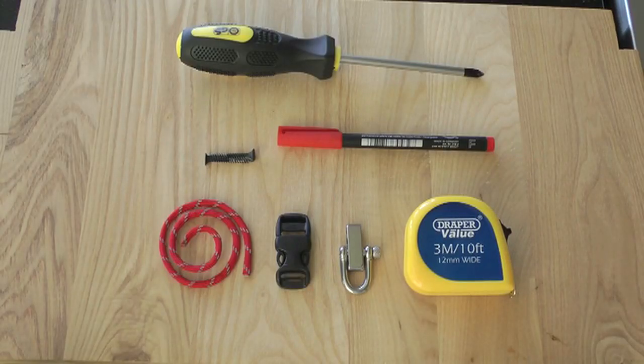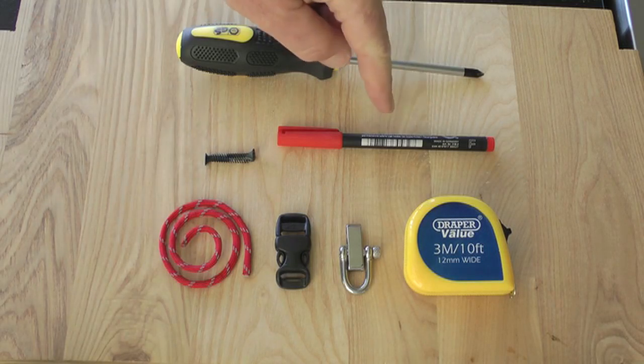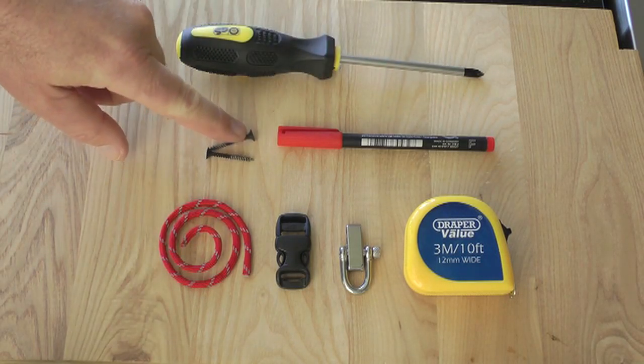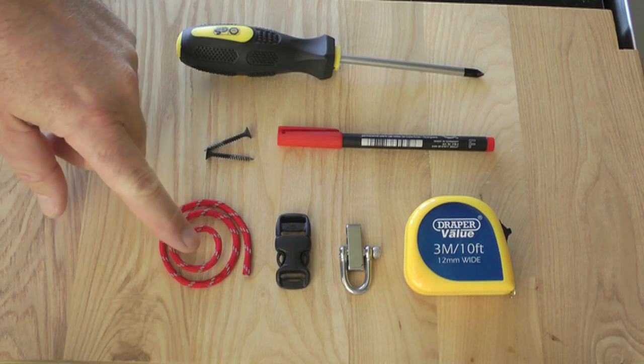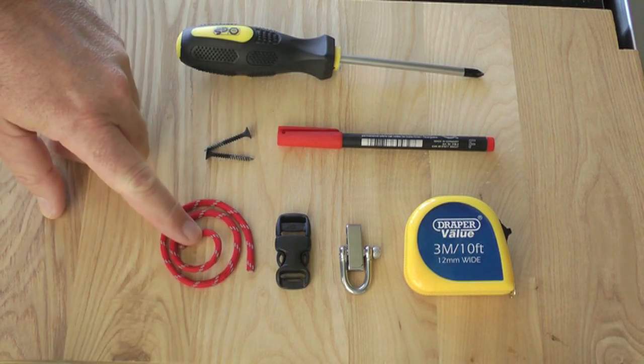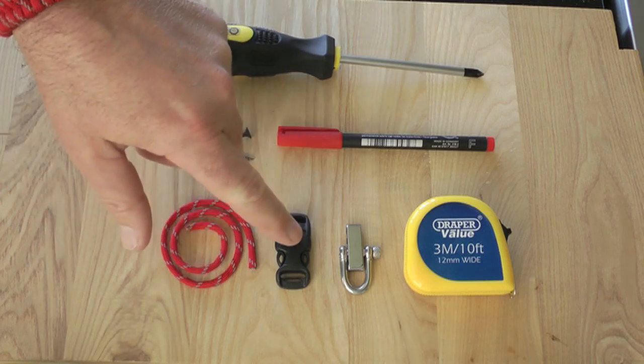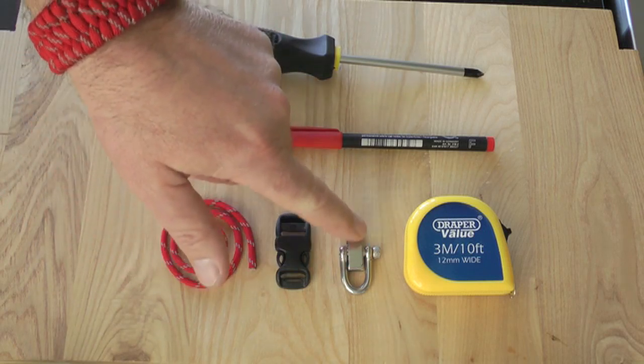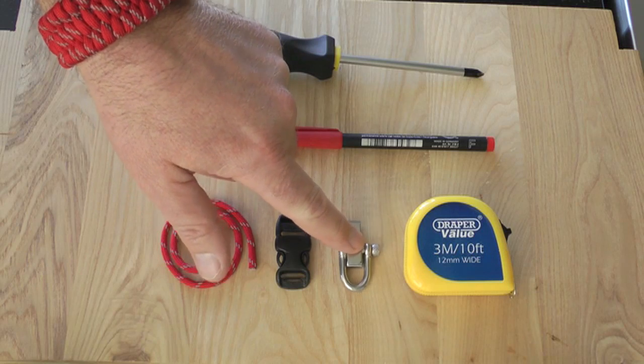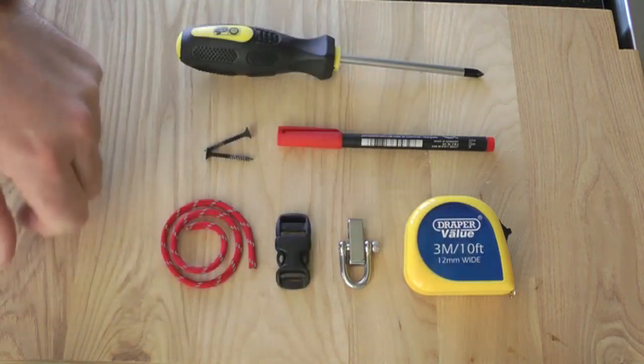To make this bracelet, you're just going to need these few items. You're going to need a screwdriver, a pen or a pencil, a couple of screws, short length of paracord or string. That's just going to secure it when we've got these screws into the board. A buckle or a shackle buckle. I prefer the shackle buckles. They're much stronger, much more durable. And a tape measure.